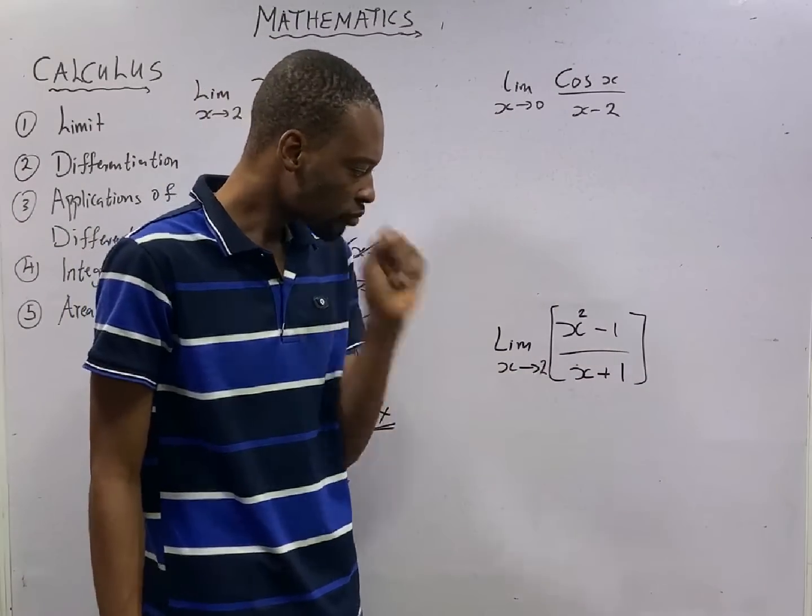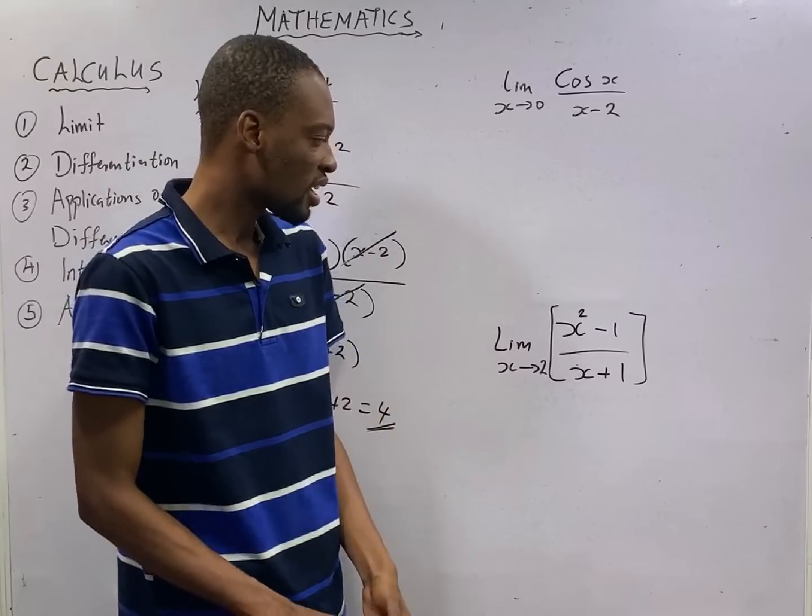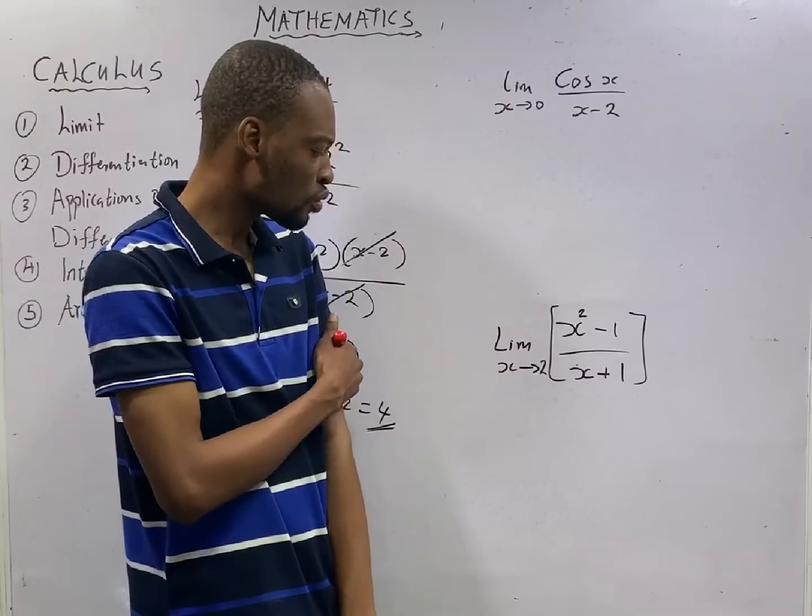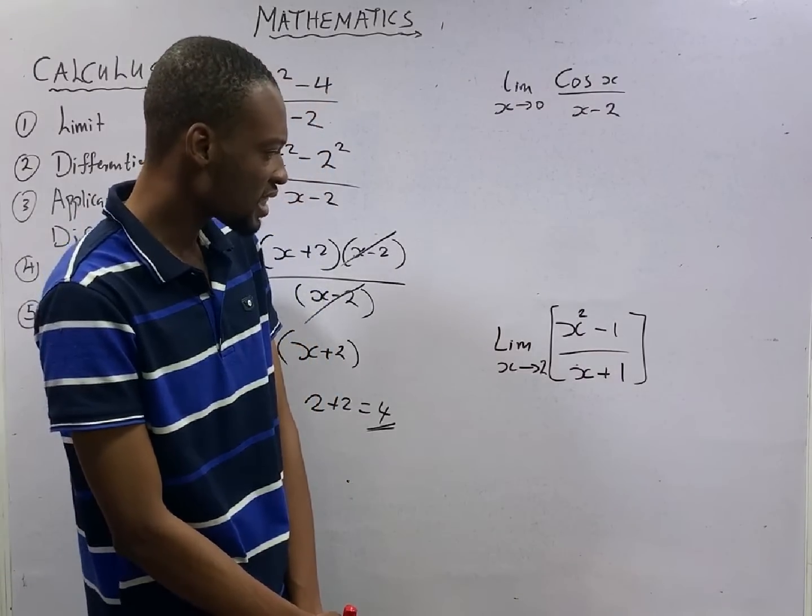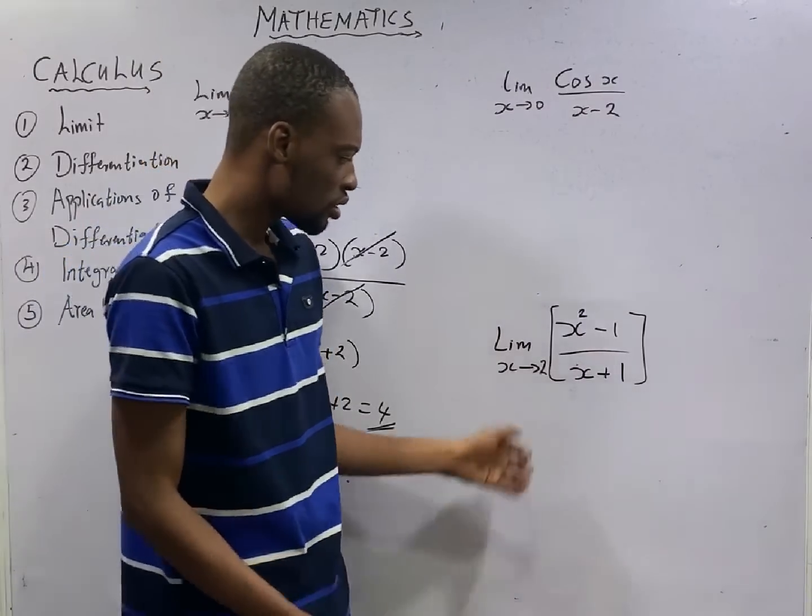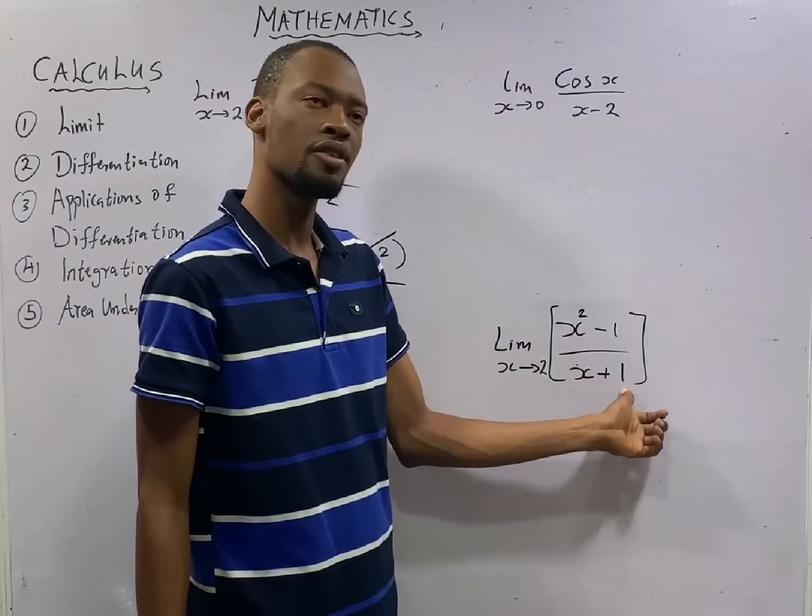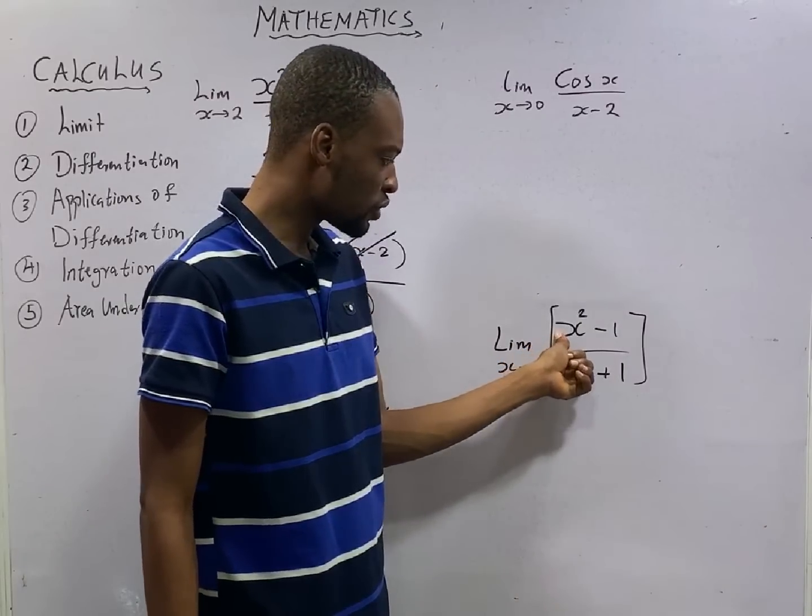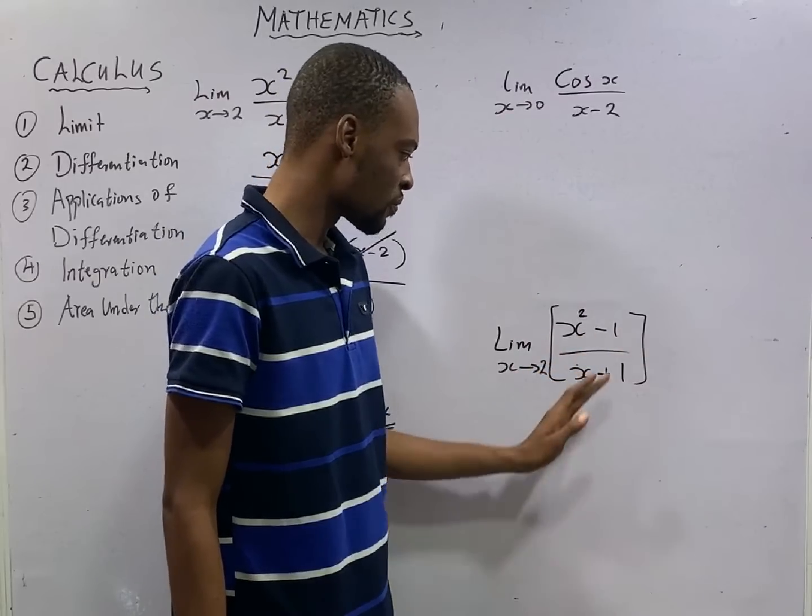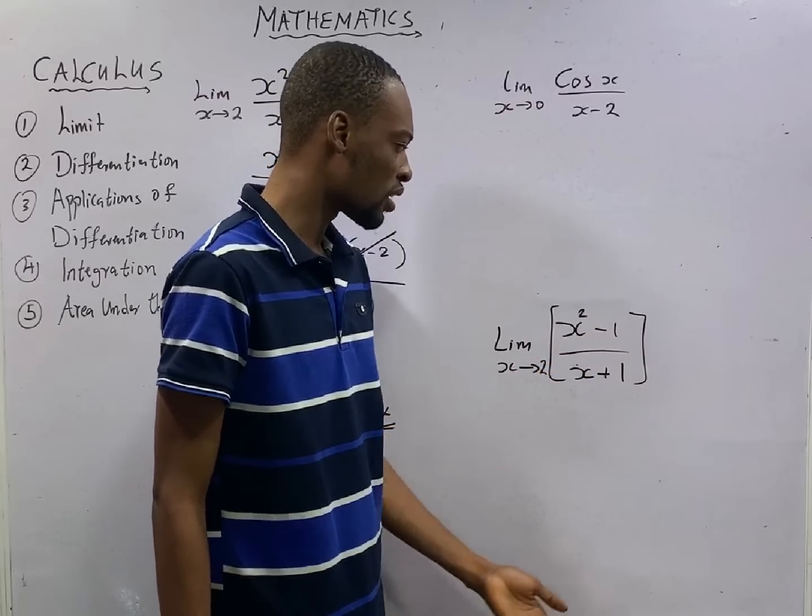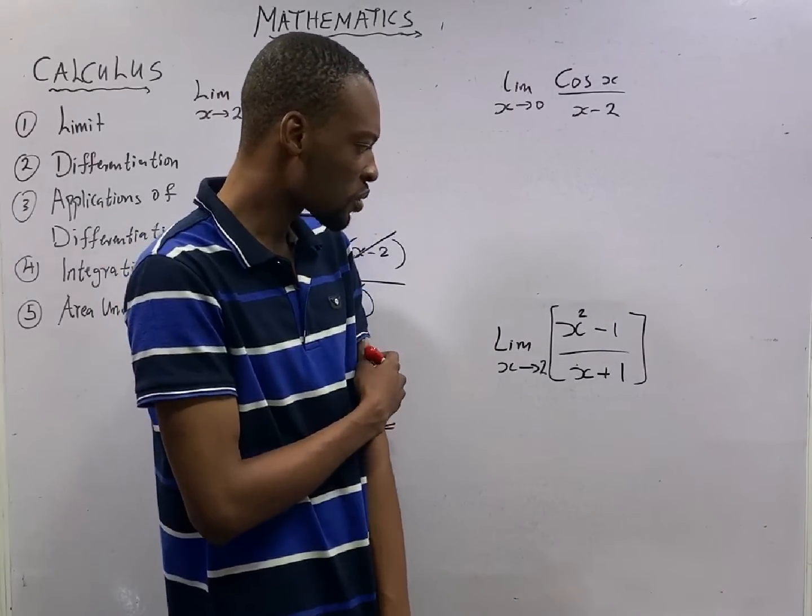Look at this function. s squared minus 1 over s plus 1, as s tends to 2. Let's look at something. If s tends to 2, if you put 2 here, you have 2 plus 1, that is 3. If you have 2 here, 2 squared is 4, 4 minus 1, that is 3. 3 divided by 3 is 1. So this function, from the best of my knowledge, it will not give you 0.